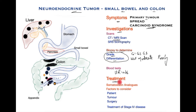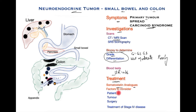Now let's examine the treatment. All patients should be treated with somatostatin analogs as mentioned before. This is a naturally occurring hormone that stops the secretion from these tumors, slows down their growth, and reduces symptoms. There are now long-acting versions available which can be taken once a month or longer.